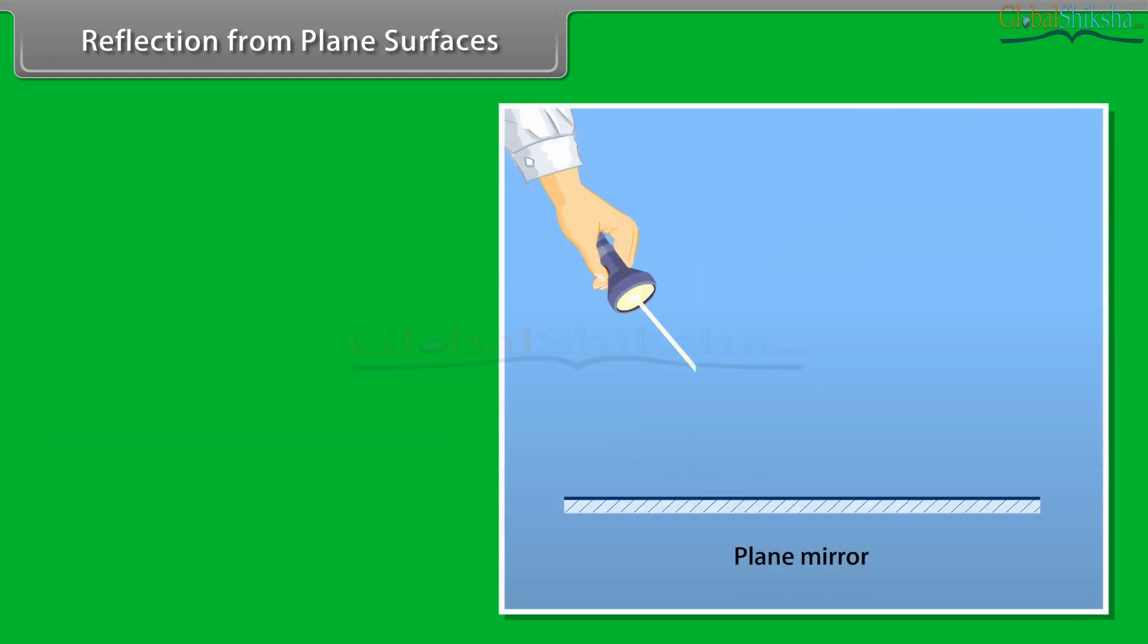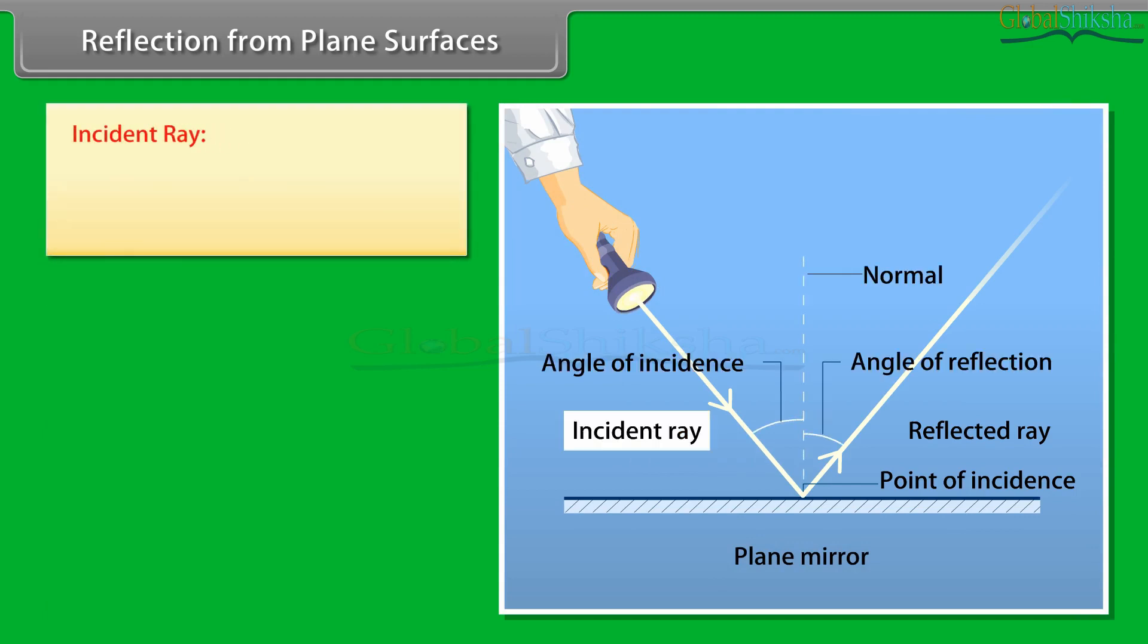Meaning of important terms are as follows to understand the figure. Incident ray: The ray of light which falls on the mirror surface is called the incident ray.